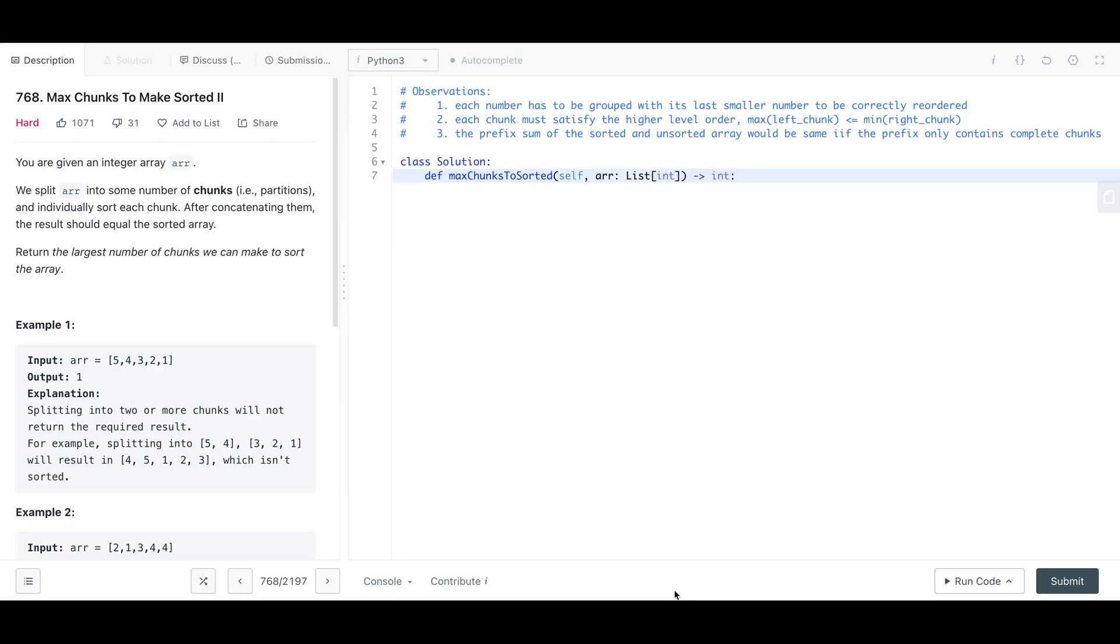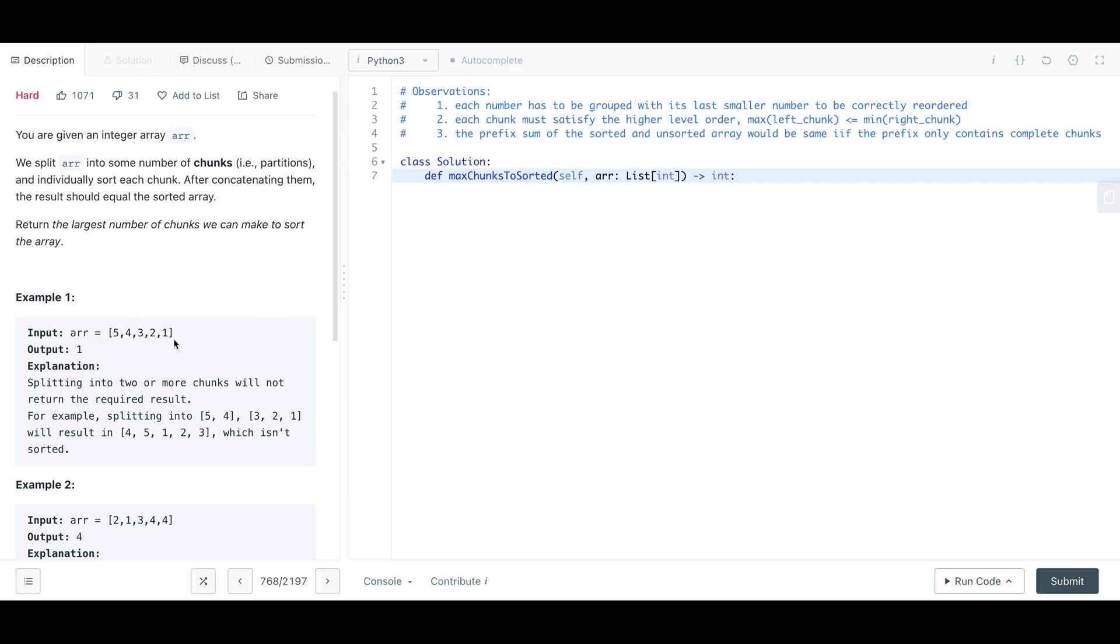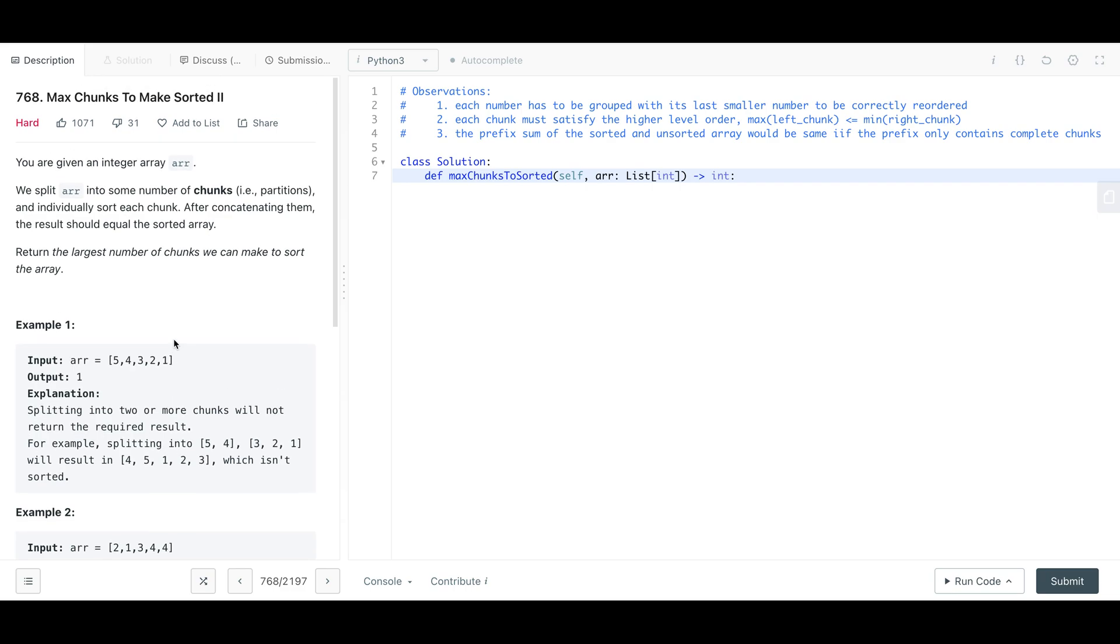Hello everyone, let's do LeetCode hard question 768, Max Chunks to Make Sorted II. This question is asking if you are given this array, how to divide them into chunks so that when you sort inside each chunk and then concatenate all the results, it will be the same as if you sorted the whole array at once. You want to divide them into as many chunks as possible. There are three quite different solutions to this problem. I will go through all of them, but you will see very clearly which one is better, especially to implement during the interview.